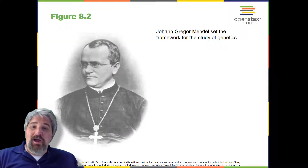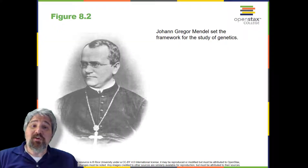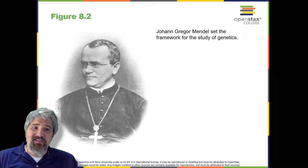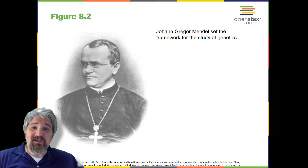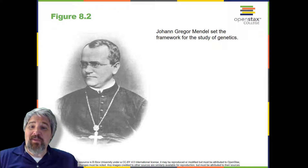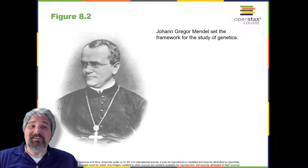Johann Gregor Mendel, 1822 to 1884, was a lifelong learner, teacher, scientist, and man of faith. As a young adult, he joined the Augustinian Abbey of St. Thomas in Brno in what is now the Czech Republic. Supported by the monastery, he taught physics, botany, and natural science courses at the secondary and university levels.